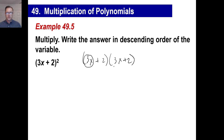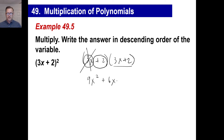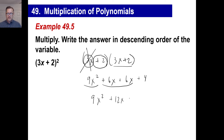Let me do this 3x first, going across. 3x times 3x is 9x squared — don't forget the squared. 3x times positive 2 is 6x. Now let's work on the positive 2. Positive 2 times 3x is another 6x. And 2 times 2 is 4. You've got a 9x squared with no other like terms. 6x plus 6x gives you 12x. Then add the 4 and you are done. There's another trinomial.